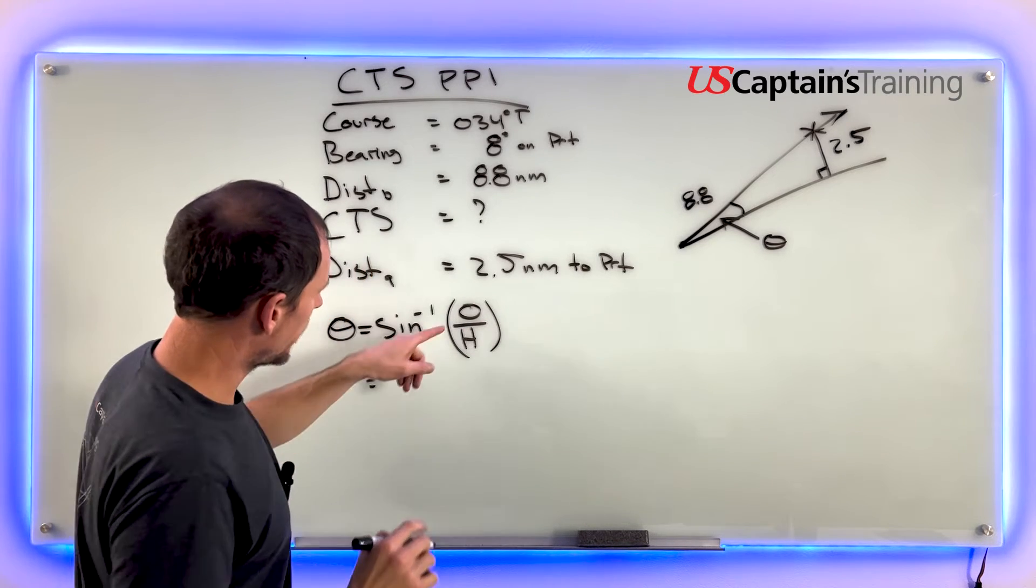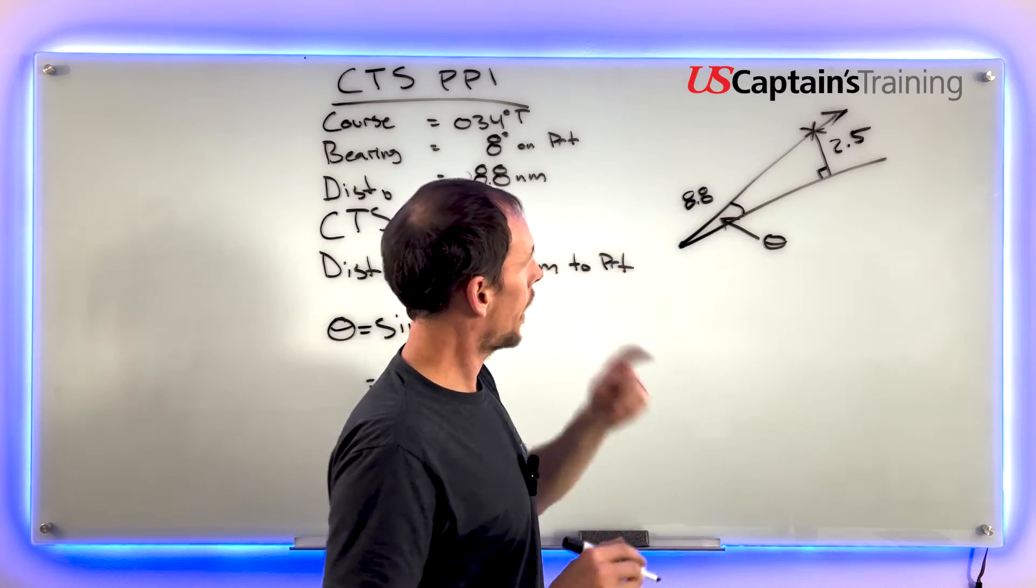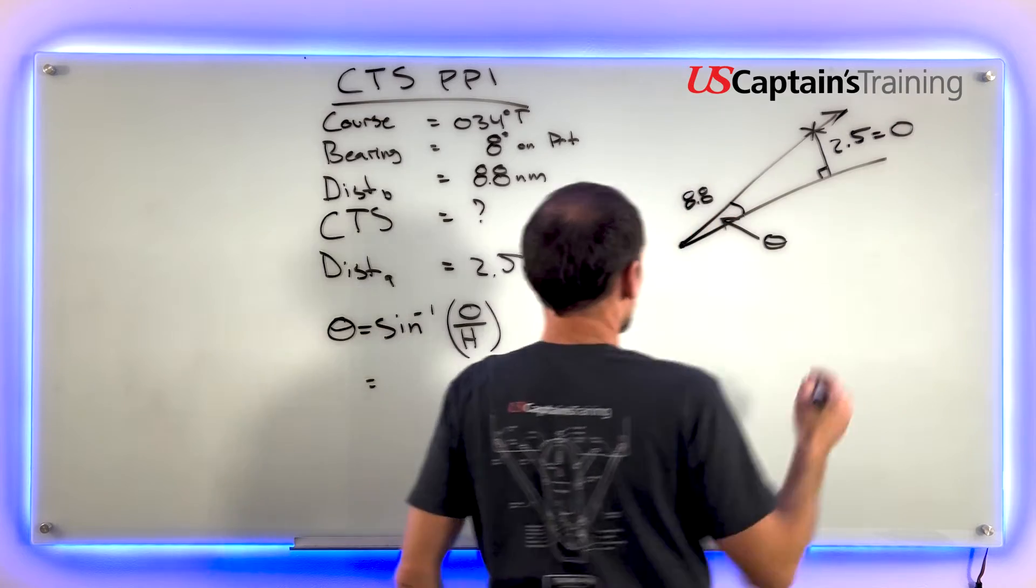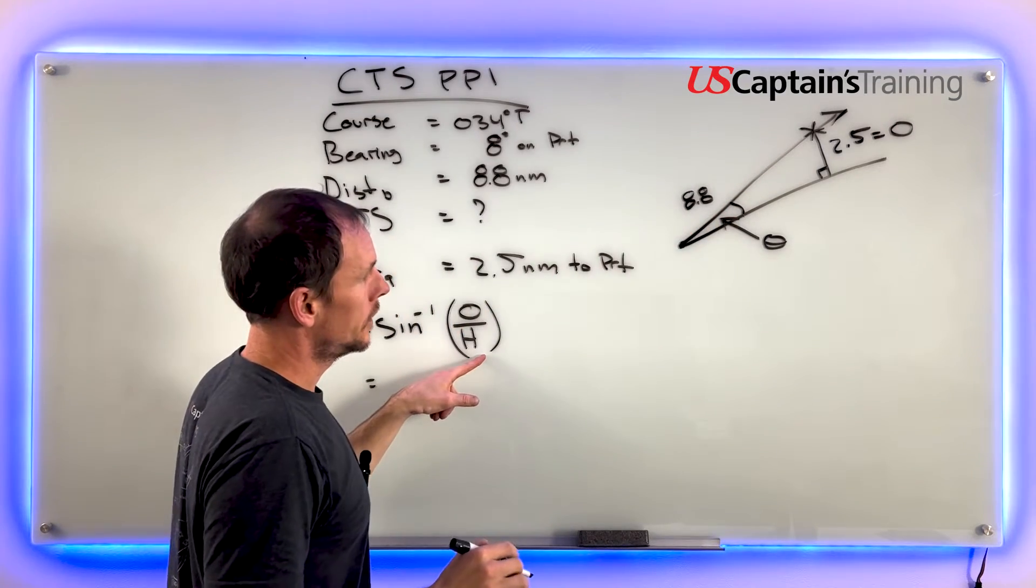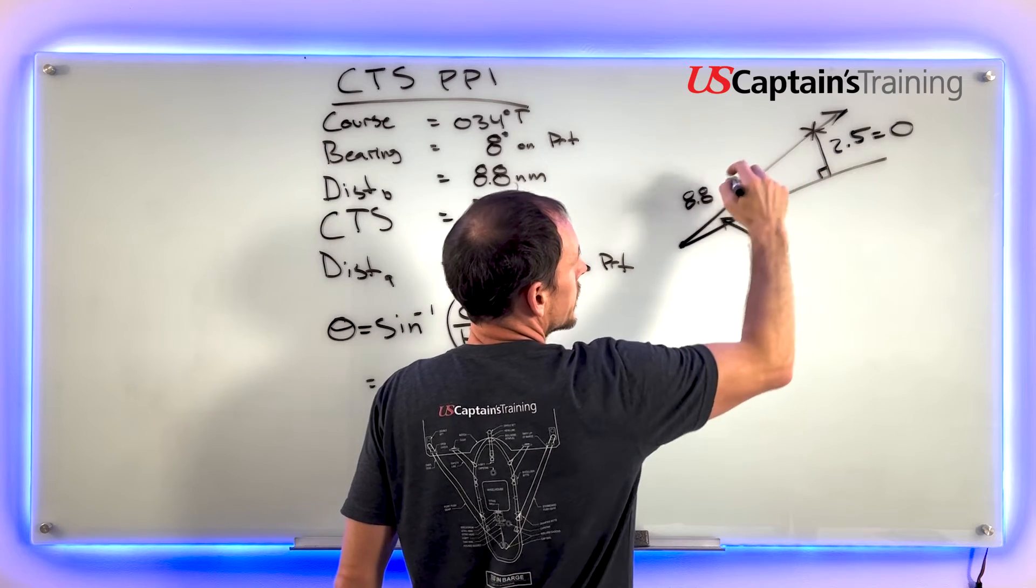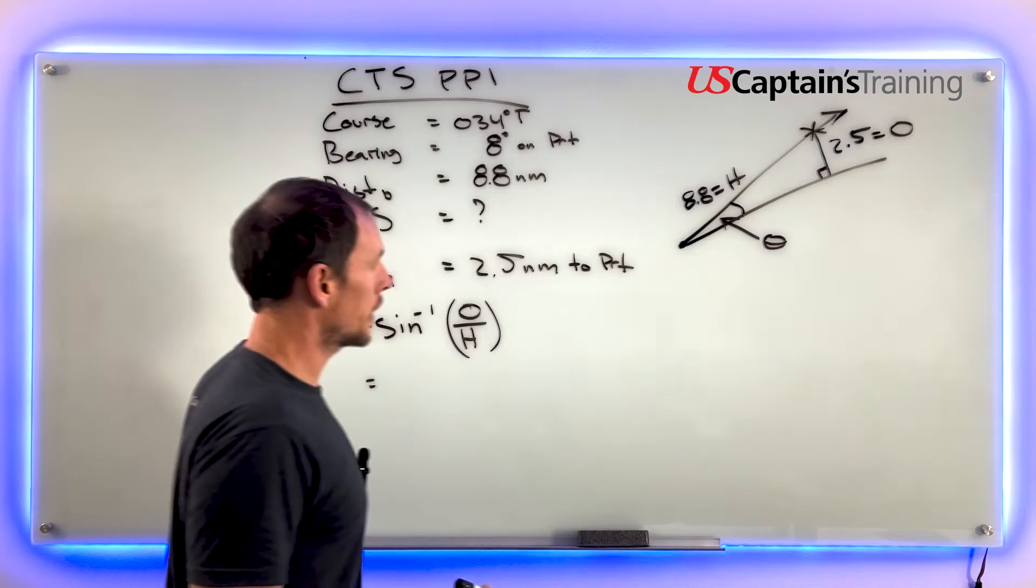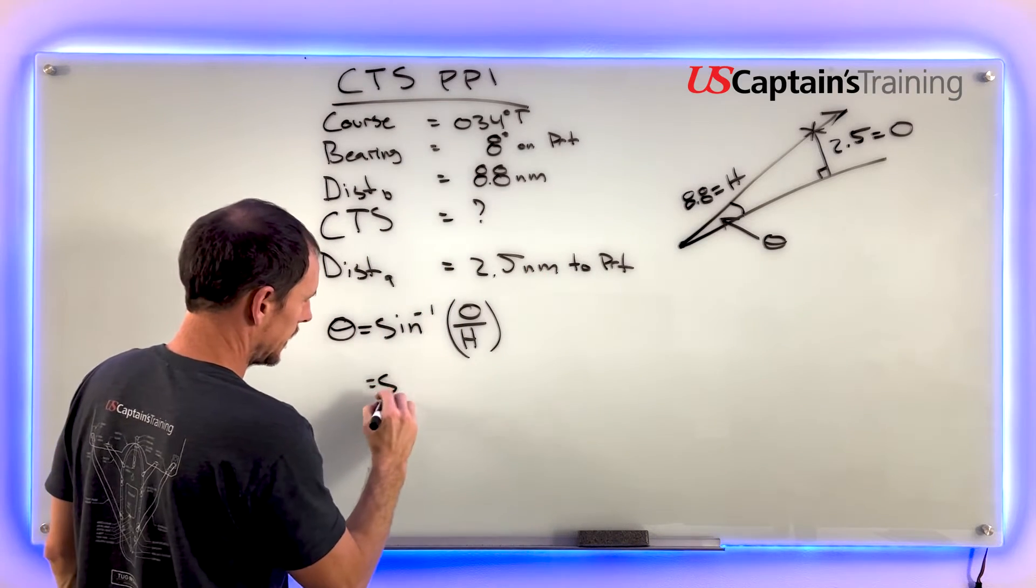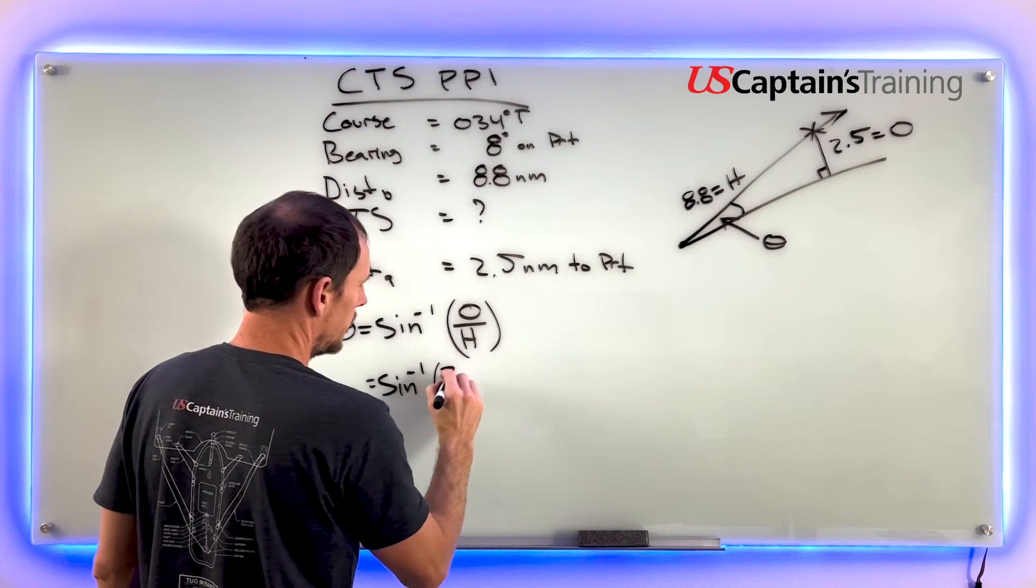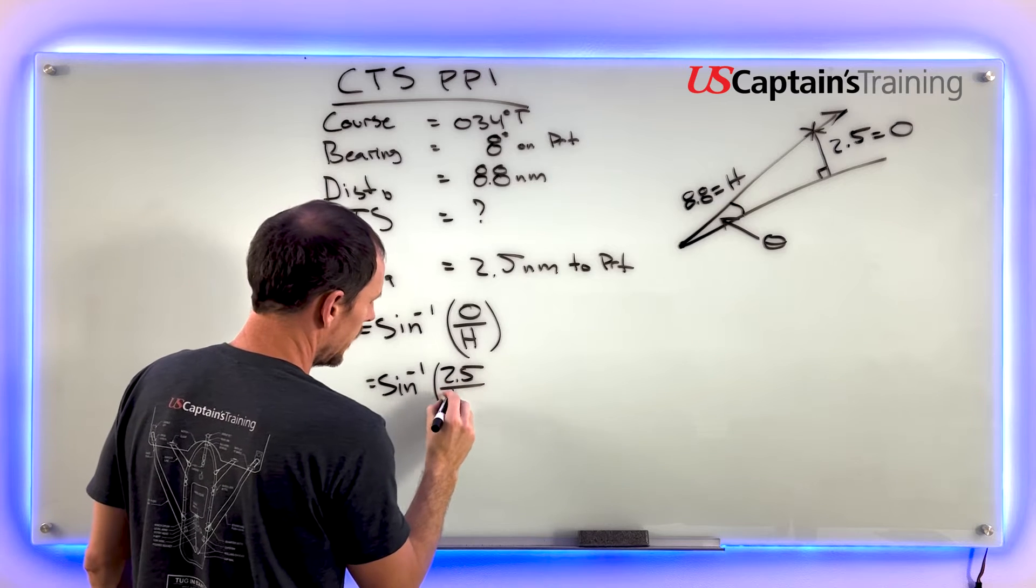We need to find the opposite - the opposite side is 2.5. The hypotenuse is going to be across from the 90 degrees, so 8.8 equals the hypotenuse. Now we can plug in our numbers: sine inverse equals the opposite, 2.5, divided by the hypotenuse, 8.8.